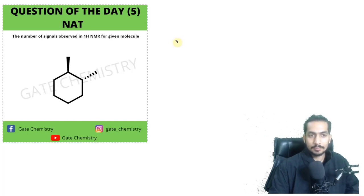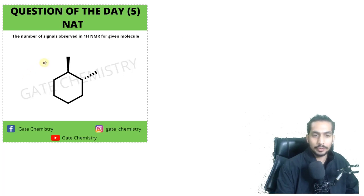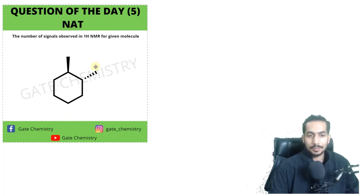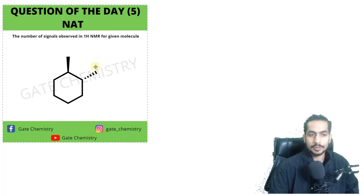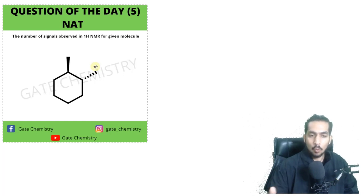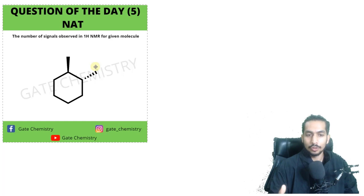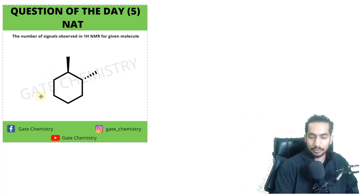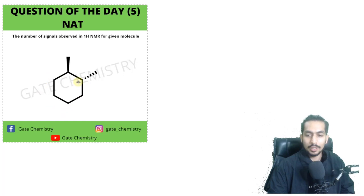A very good evening. So I had given a question today related to the number of signals observed for this particular molecule. Even though when I was putting out the question I did have a reference, when I saw some other references there was no one consensus — they were not pointing toward one particular answer. In none of the references had they particularly mentioned how many signals you will observe for this molecule.